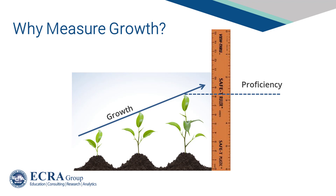Focusing school improvement and school accountability on student growth overcomes two major challenges often cited with the use of proficiency rates to judge school improvement efforts. First, measuring growth at the student level removes confounding factors attributed to different groups of students' demographic shifts, cohort effects, and differential standards across grade levels that create variation in proficiency rates unrelated to school performance.